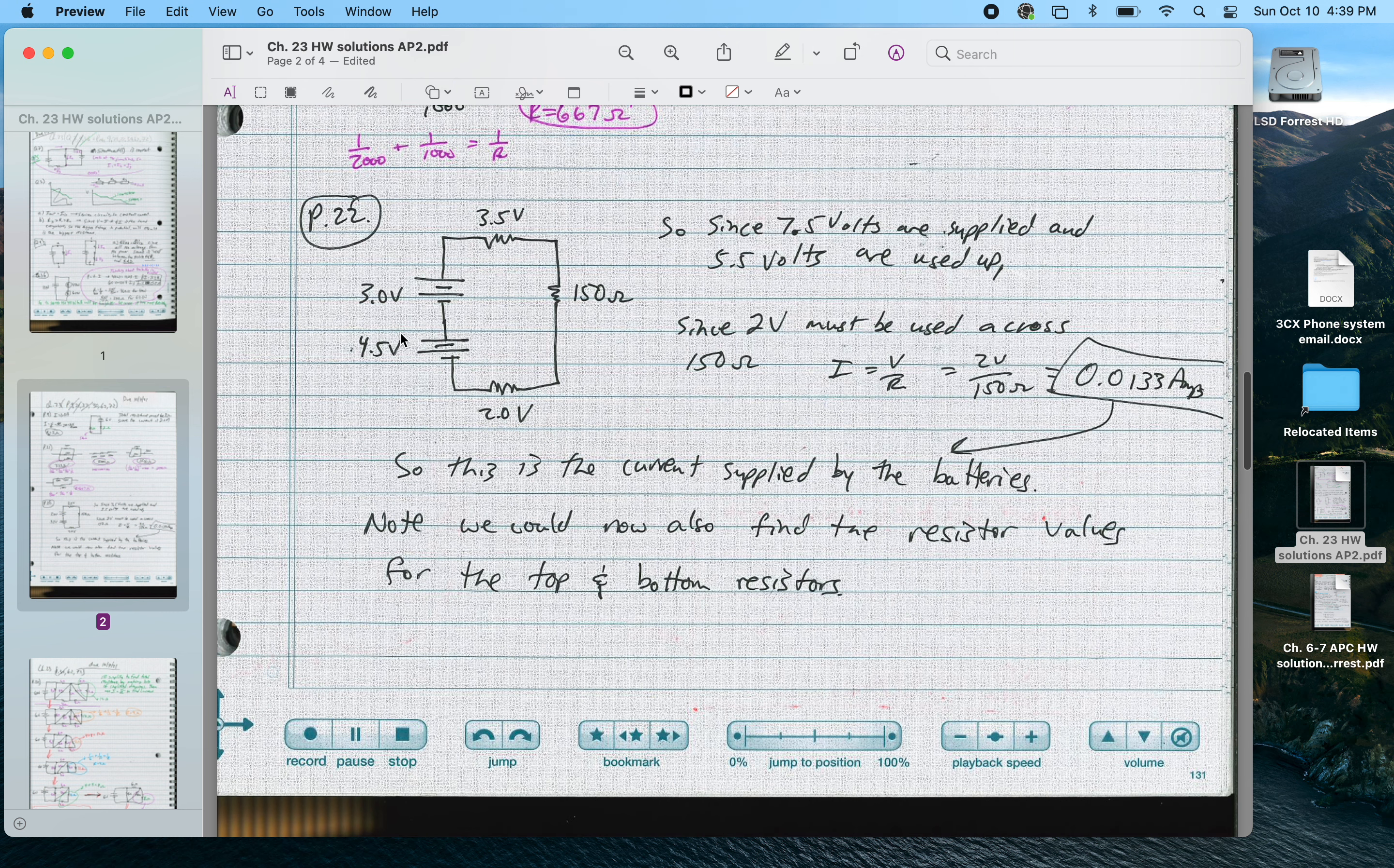For P22, I was given this diagram, 7.5 volts going in. They're added up because both batteries are pointing in the same direction. I lose 3.5 volts here, 2 volts here. That means that I have 2 volts left to lose here, since 5.5 volts has already been used up. So now I could figure out the current on the circuit, 2 volts across this resistor divided by its resistance gives me 0.0133 amps. And so that's the current supplied by the batteries. The main thing is that current is V divided by R. I know the voltage across this has to be 2 volts, for reasons mentioned earlier.